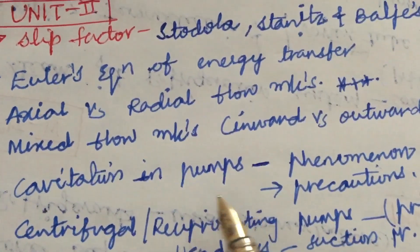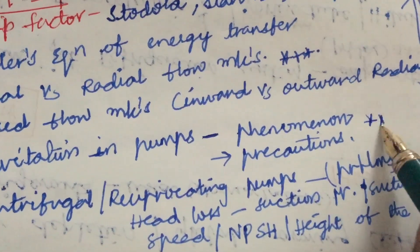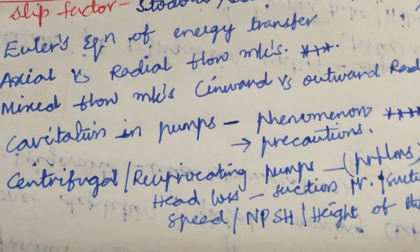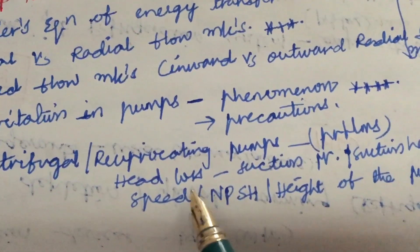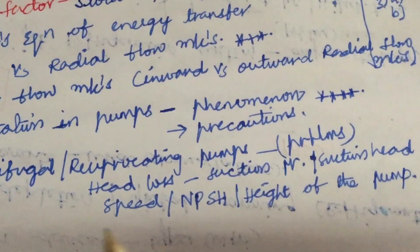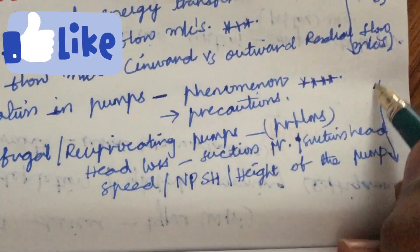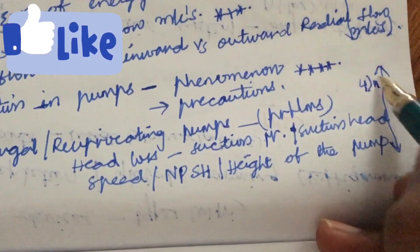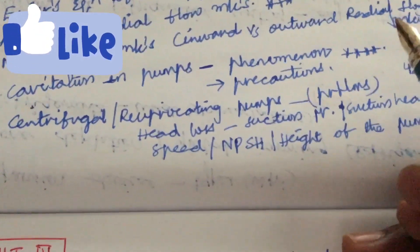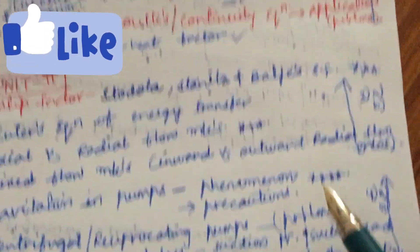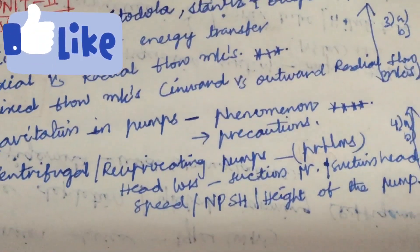Next it is all about pumps — the cavitation of pumps, its phenomena, and explaining the precautions is a gunshot question asked for 7 marks. Related to centrifugal pumps as well as reciprocating pumps, problems where they ask you to calculate head loss, suction pressure, suction head, speed, height of the pump, or NPSH are expected. Do carry your calculator to work out problems quickly. If you work out the first and second units, you are going to get 4 questions from the topics covered so far.